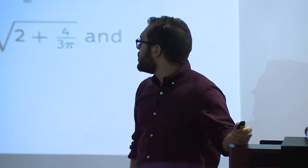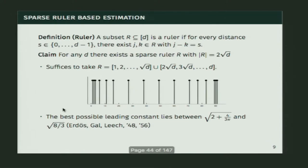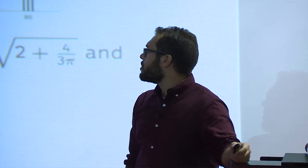The optimal rulers don't usually look like this simple construction. They tend to have more densely measured points near the edges and fewer near the middle. We noticed these ruler constructions look a lot like Chebyshev interpolation — we think there's some connection there, but we don't yet have a formal answer.